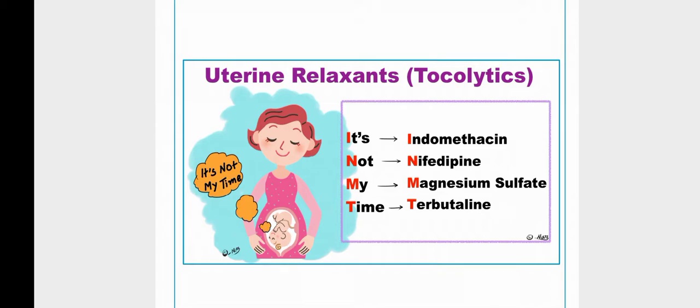The cyclooxygenase enzyme has two isoforms: cyclooxygenase type 1 and cyclooxygenase type 2. Type 1 is expressed in non-inflammatory cells, while type 2 is expressed in inflammatory cells. NSAIDs inhibit cyclooxygenase enzymes, which decreases prostaglandin production throughout the body.